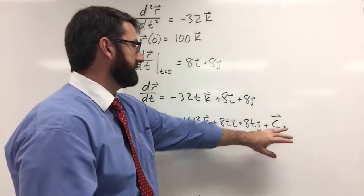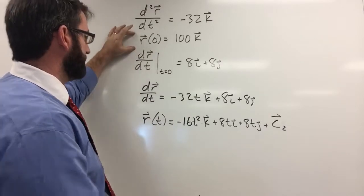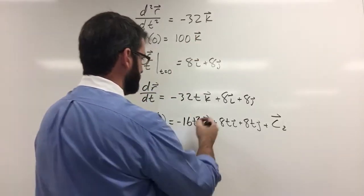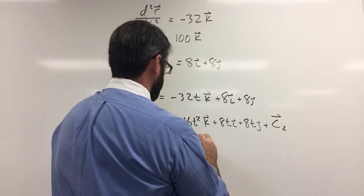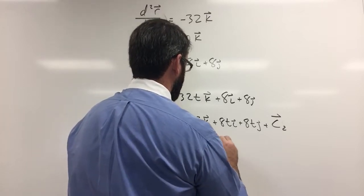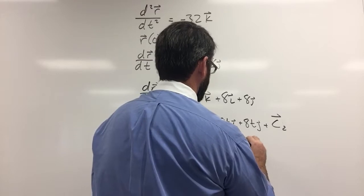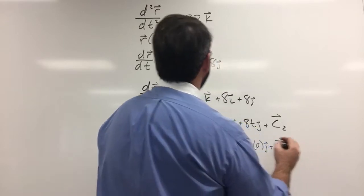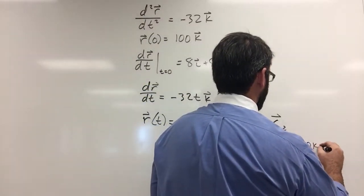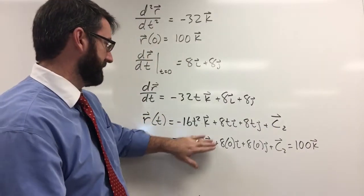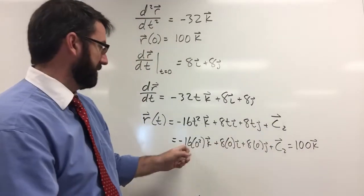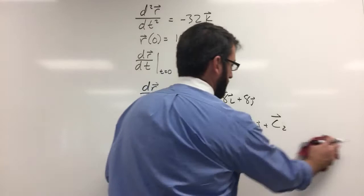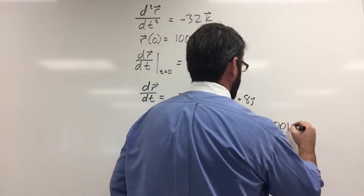And to find that constant vector, we're going to use this at r times 0 is 100k. So if we plug in 0 for t, negative 16 times 0 squared k plus 8 times 0i plus 8 times 0j plus c2 is equal to 100k. And now again, you can see that all of these terms are going to go away because we're multiplying by 0 in each of them. And so c2 is just 100k, and we can replace this c2 with 100k.